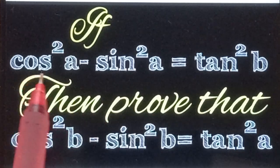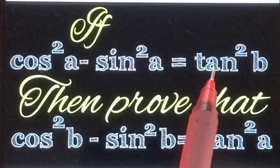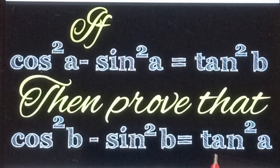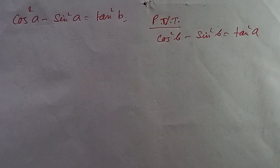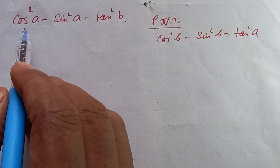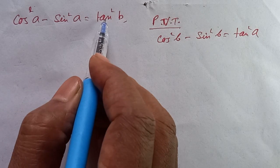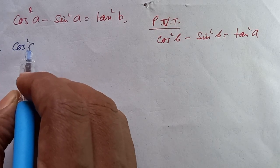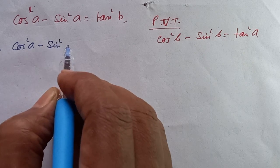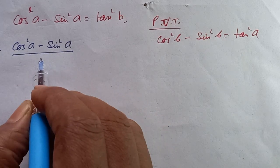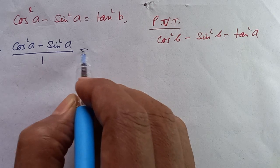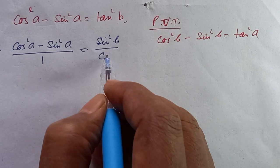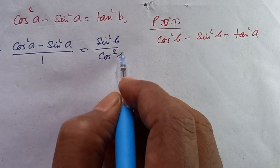We have to show that cos²a minus sin²a equals tan²b, and then show that cos²b minus sin²b equals tan²a. We write cos²a minus sin²a divided by tan²a, and this equals tan²b, which relates to sin²b minus cos²b.